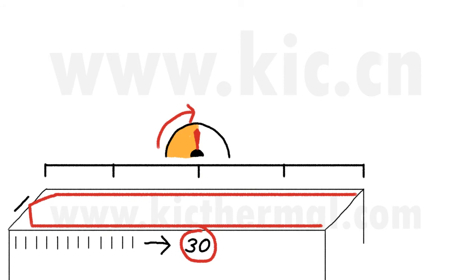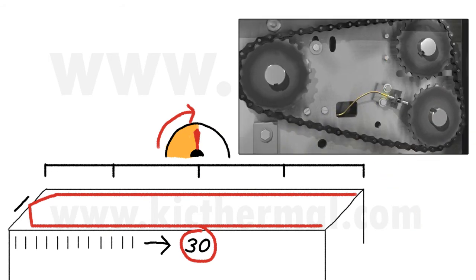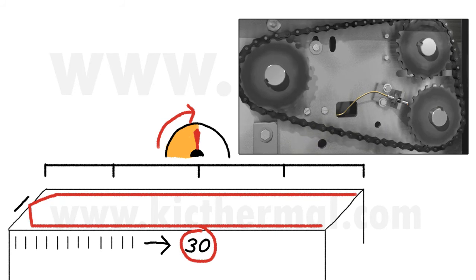In addition we use a speed encoder to measure the conveyor speed. This way we always know how long the PCB is subjected to the changing environment.